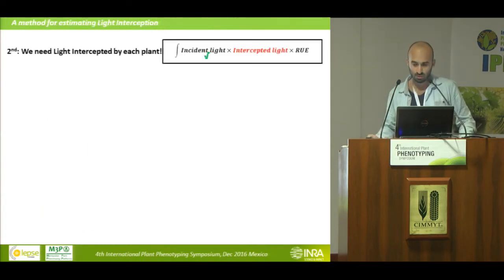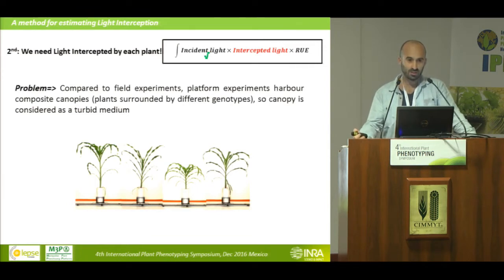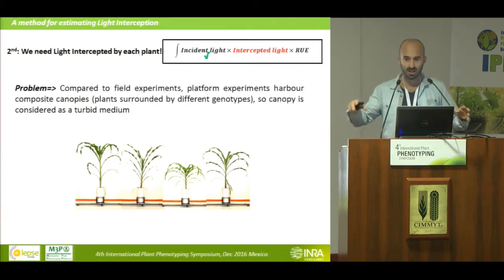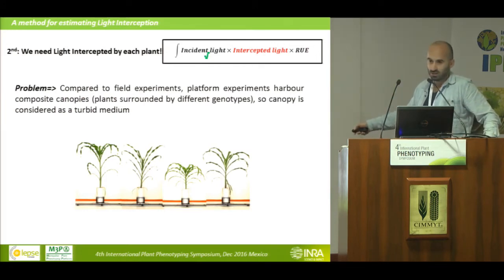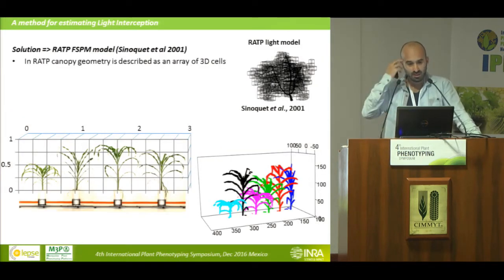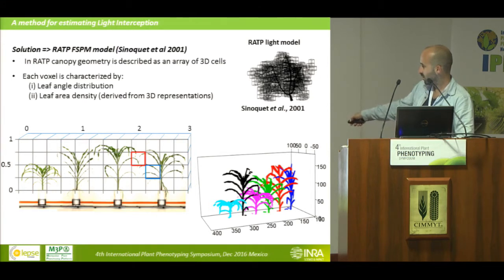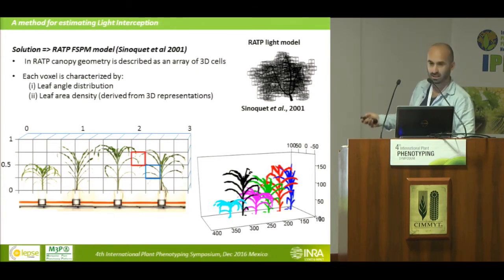The second challenge was measuring how much incident light was intercepted. Unlike field experiments with homogeneous plots of the same genotype, in 99% of platform experiments we have composite canopies — one plant surrounded by plants of different genotypes, with neighbors of varying sizes and architectures. To solve this, we used the RATP functional-structural plant model, which describes canopy geometry with an array of 3D cells. Each cell may contain leaves from different plants, characterized by leaf angle distribution and leaf area density derived from 3D representations.